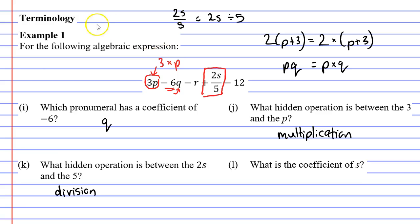What is the coefficient of s? And a lot of people make a really big mistake, and they go, all right, the number in front of s is the 2. But you actually need to look at the whole complete fraction. The coefficient of s for question L is actually 2 over 5. It is very important that you include the 5 as part of the coefficient.